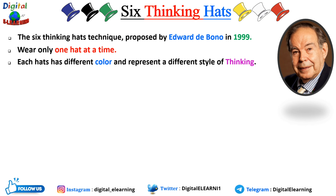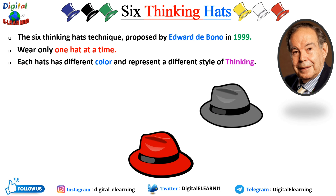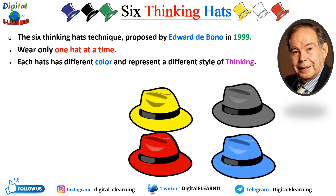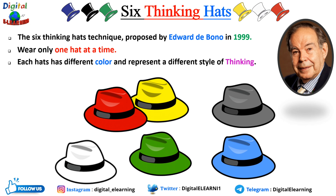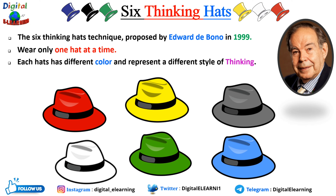Each hat has a different color and represents a different style of thinking. The colors of the hats are red, black, white, yellow, green, and blue. These colors were chosen for a particular reason — they are associated with certain situations to help you remember the objective of each hat. When you wear a specific hat, the rule is you stick to the kind of thinking it represents. When you want to switch to a different style of thinking, you need to switch the hat as well.